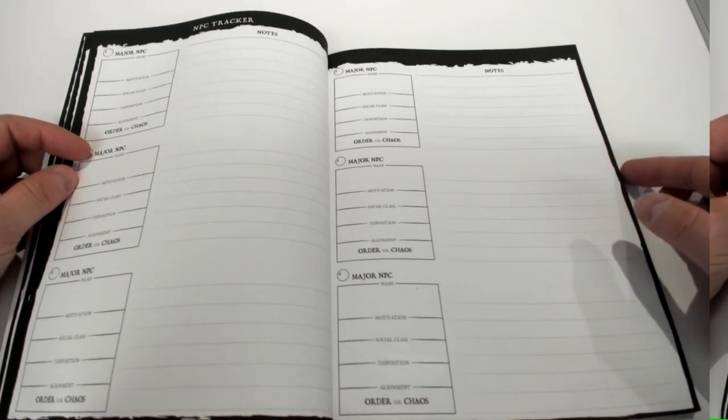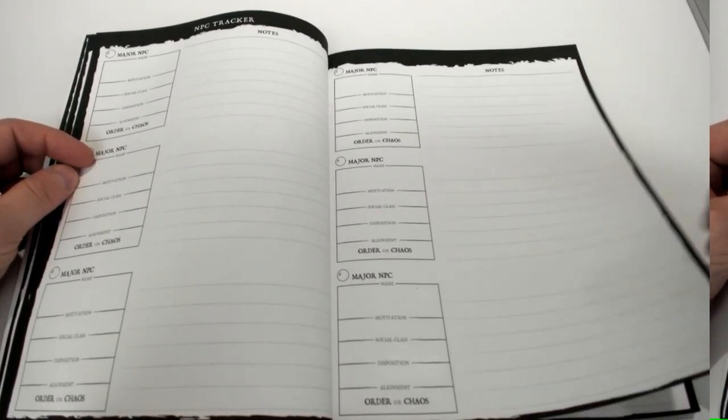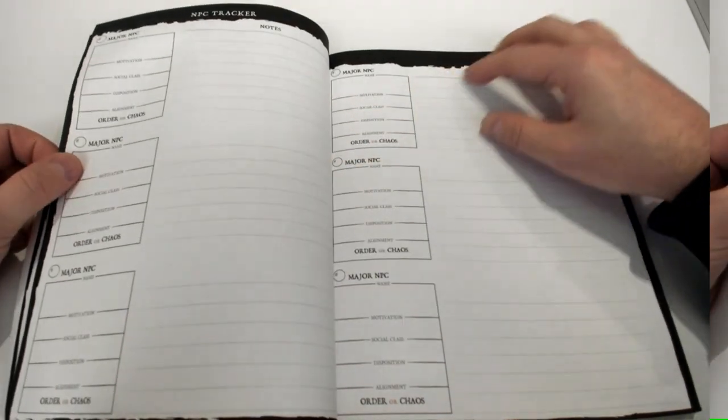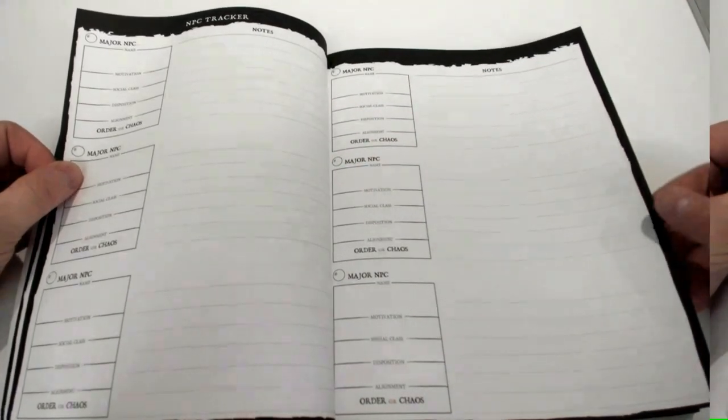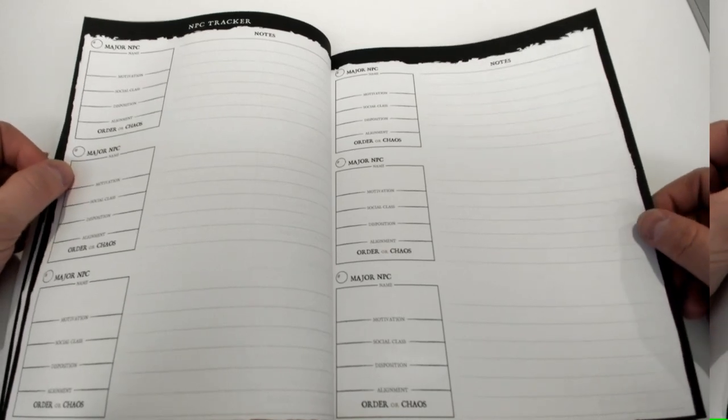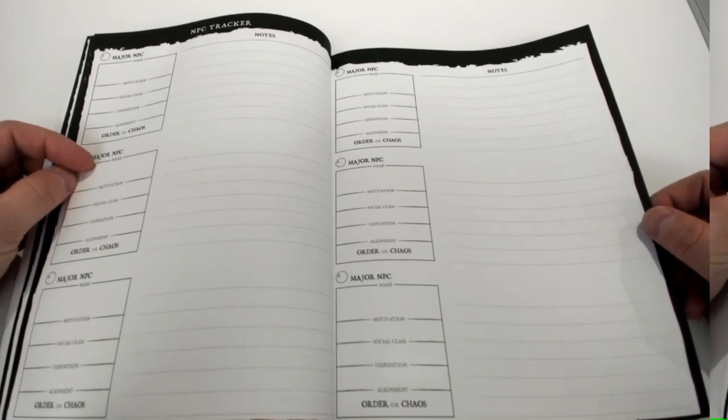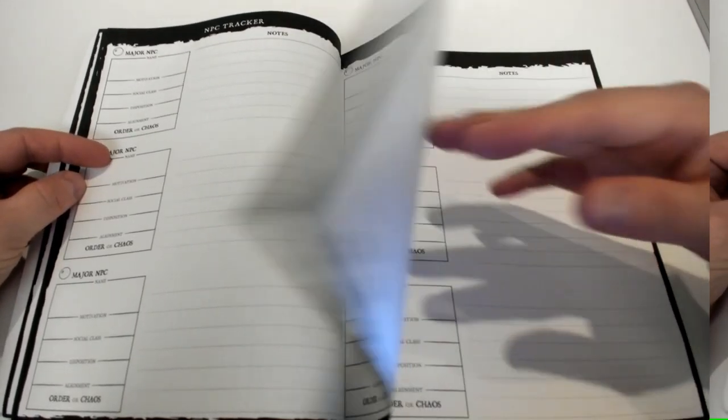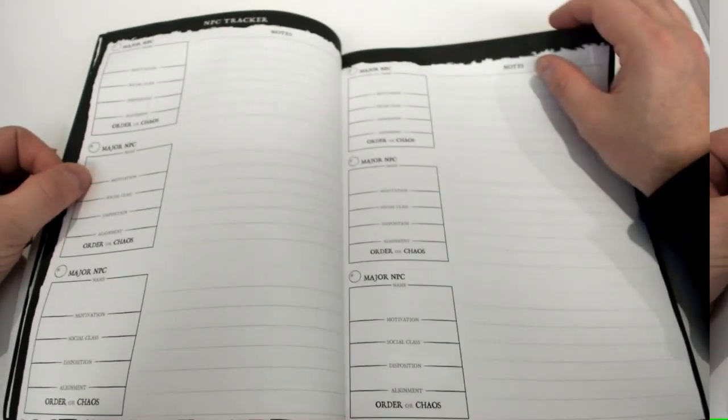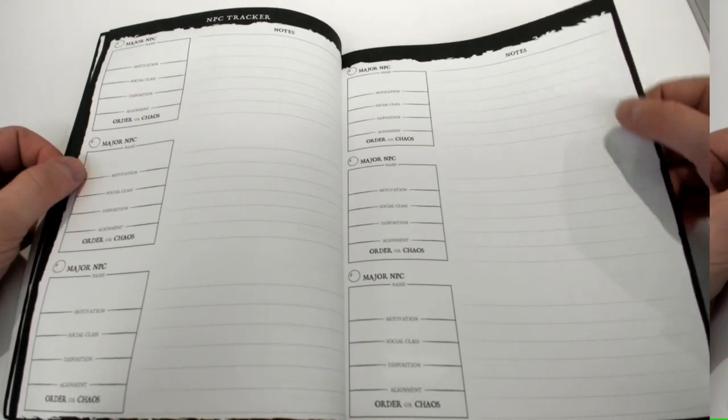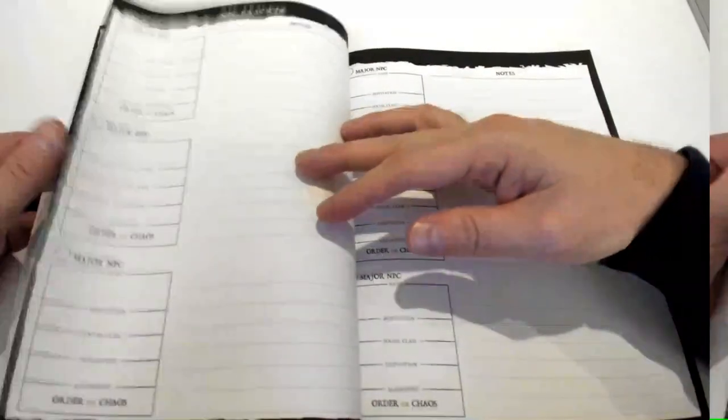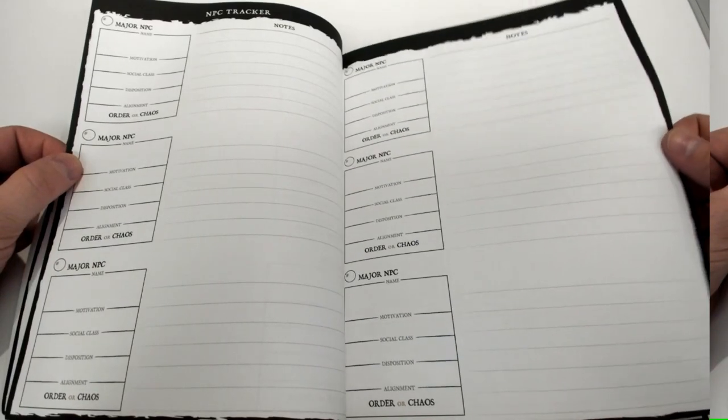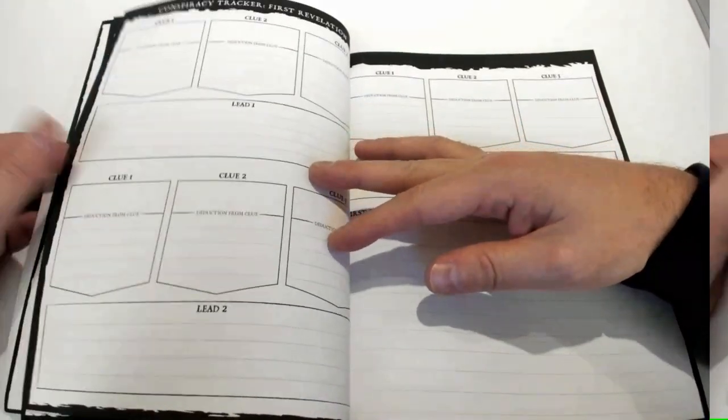So you have plenty of room to basically track all of the major NPCs across the conspiracy. But of course you can use this for other things too, because we know that conspiracies are the center of a lot of adventures but isn't necessarily every campaign. So you can still use this to track all of your NPCs regardless, even if you don't intend to use the conspiracy rules. We've included plenty of room - I believe we can accommodate up to I want to say 18 different NPCs.